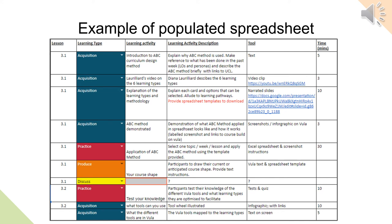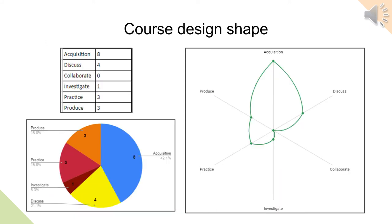Once you have noted down the activities using the spreadsheet, you now have an overall picture or plan of how the lesson, week, or course will look. The next step is to reflect on your plan. You can do this by counting and totaling the number of each learning type used. In the spreadsheet template, this is set up for your convenience — once populated, you will be able to see your course design shape in the form of a pie chart or radar chart, noting the learning types that are dominating and reflecting if this matches your intended pedagogical framework.